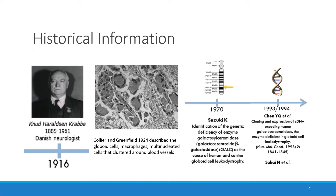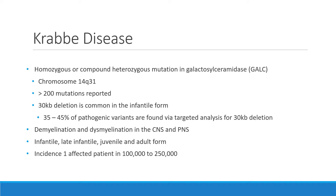The cloning and expression of the cDNA encoding human galactocerebrosidase was described by Chen et al., Sakai, and also Wenger around 1993 to 1994, a huge advance in understanding the disease. Most patients until then were being diagnosed based on low enzyme levels in the blood. We now know that Krabbe disease is caused by a homozygous or compound heterozygous mutation in galactosylceramidase, or GALC, on chromosome 14q31.